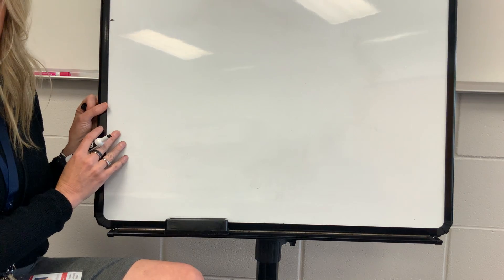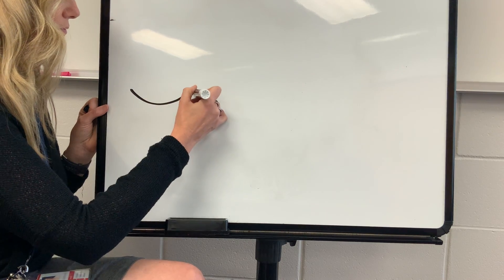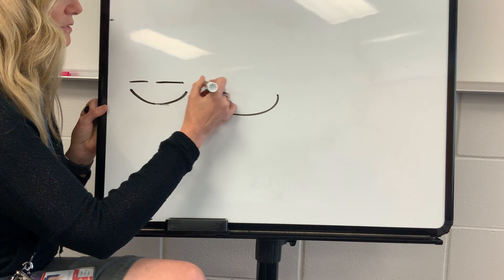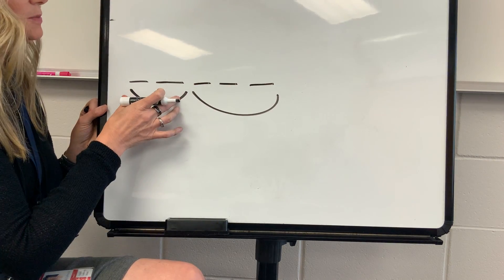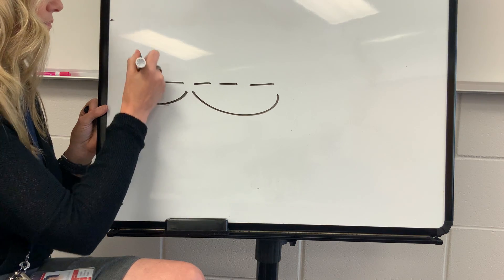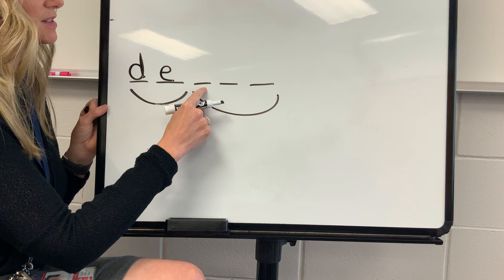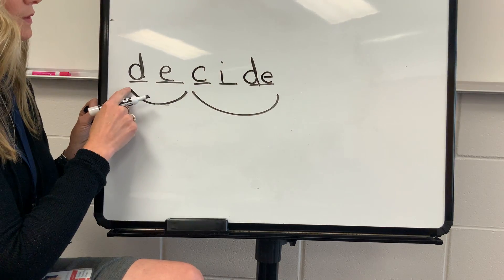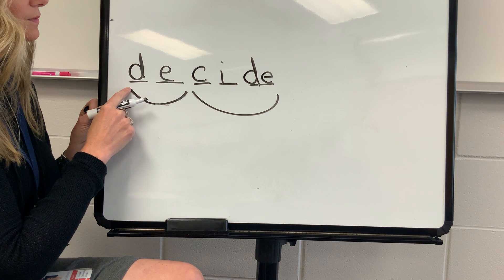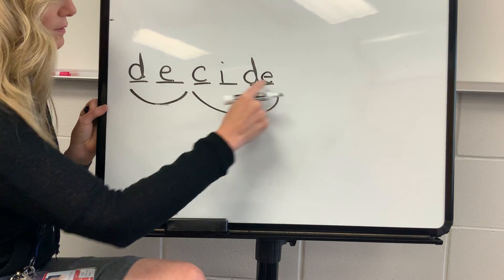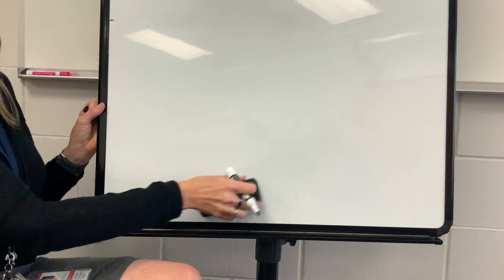All right, let's do a challenge word. Let's do decide. What word? Decide. Tell me the syllables in decide. D-side. Stretch D: D-E. Stretch side: S-IDE. Write your spellings for decide. This is open syllable, and this is spelled with a C. Check it. Spell decide: D-E-C-I-D-E. Word: decide. Yes, decide. D-side.